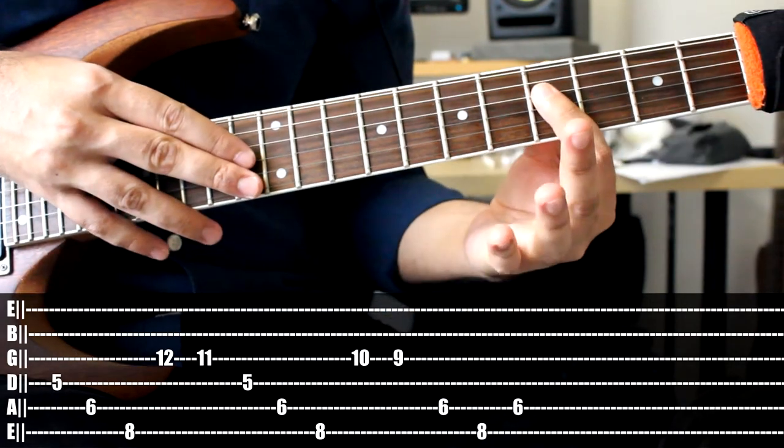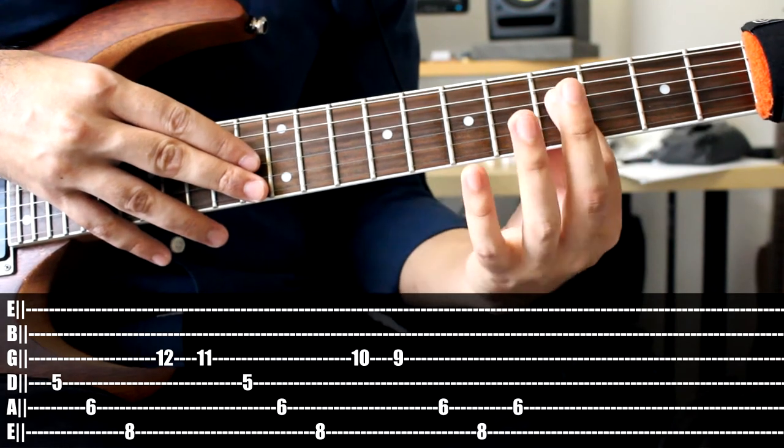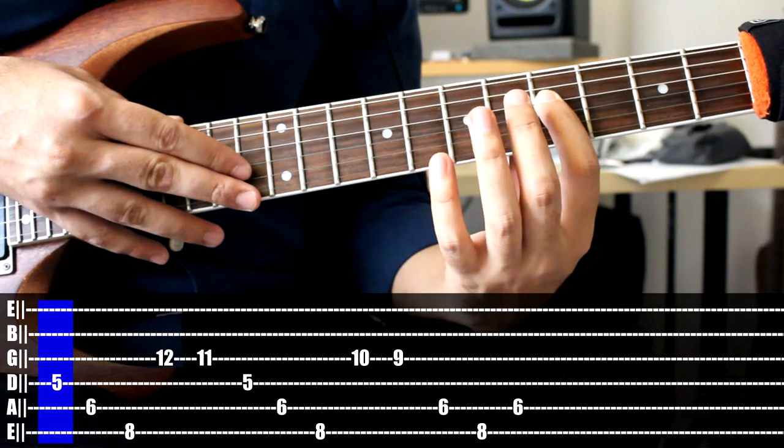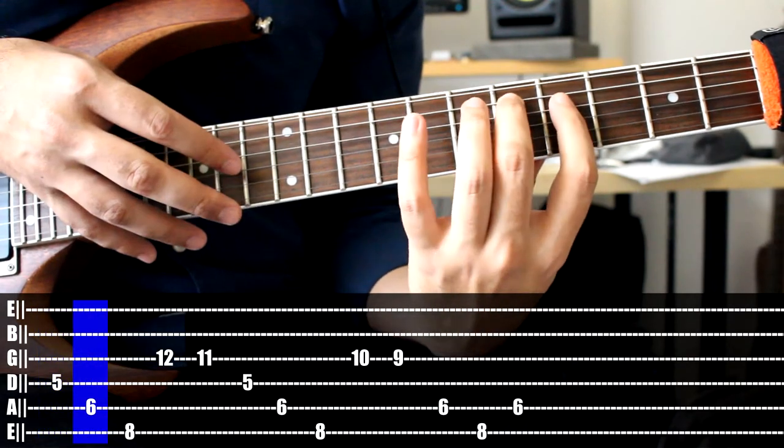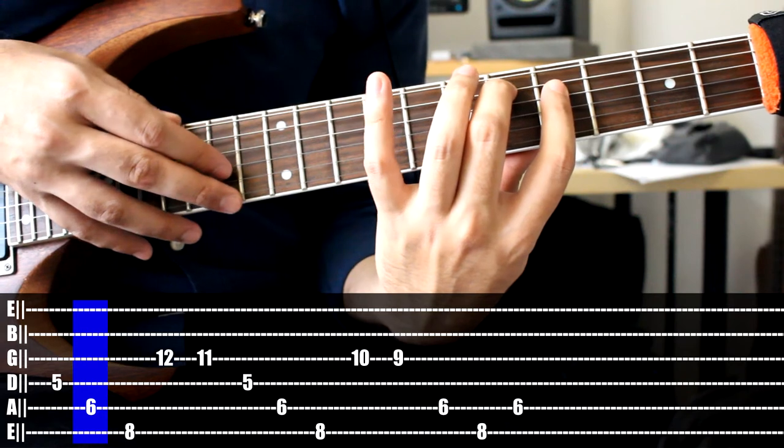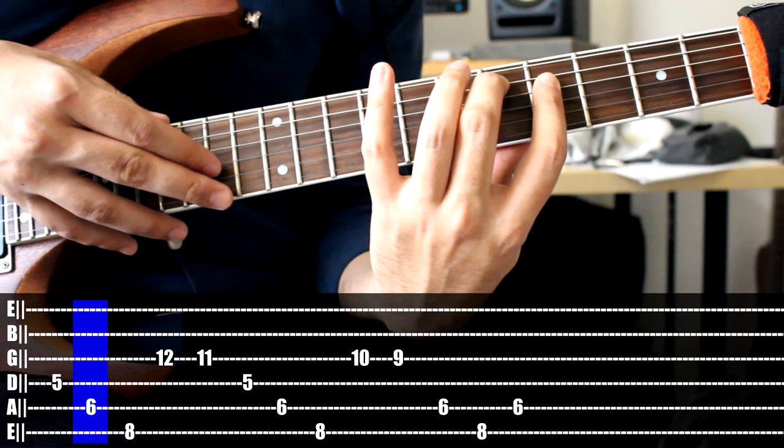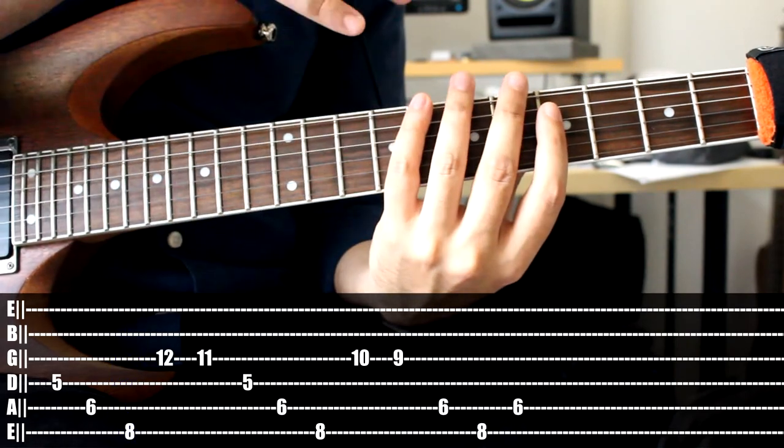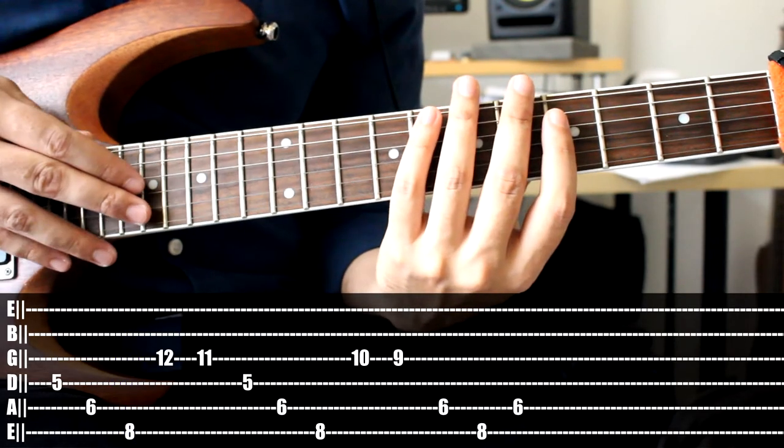Starting on the D string 5 with our index finger. And then we're adding the 6 on the A string with our middle finger. And with our pinky on the low E string 8. And these are all, you don't let them ring, so they're all just separate from each other.